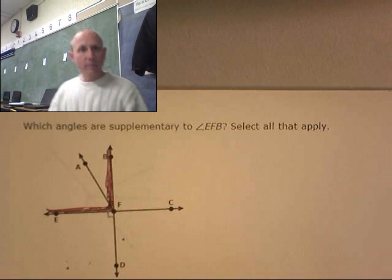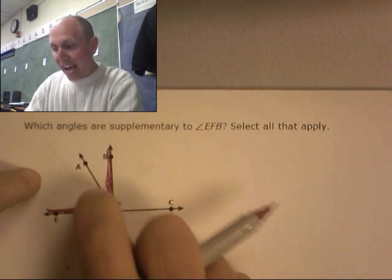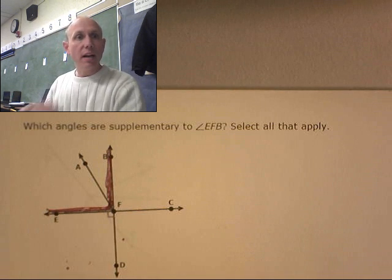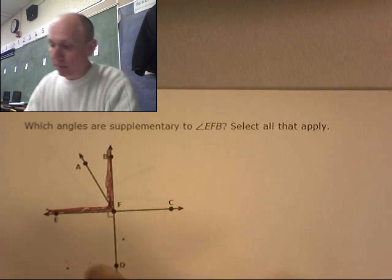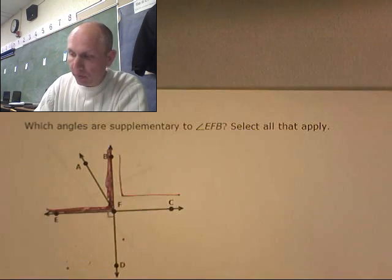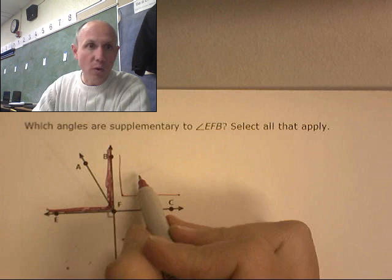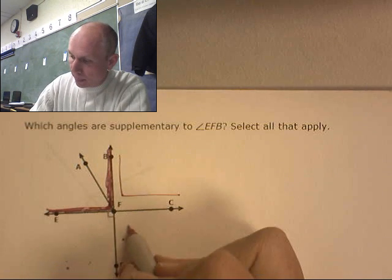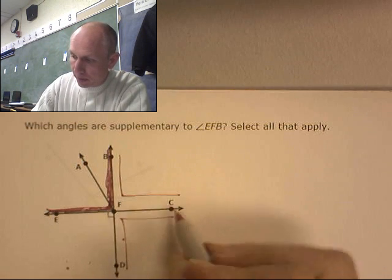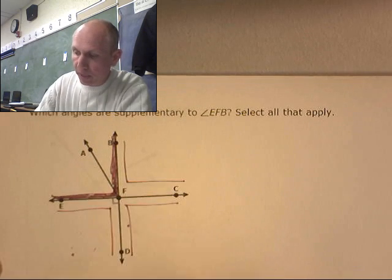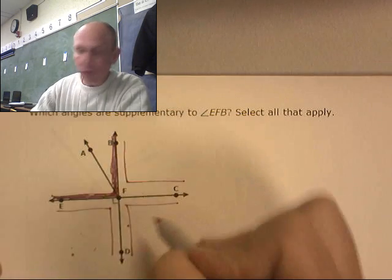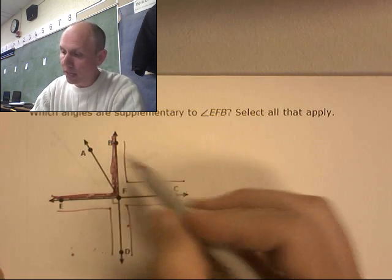Got it? Which angles, if I add them to this guy, will make a straight line? Which angles will add up to 180 degrees if we add them together? Well, here's one. This guy right here. This one plus that one is 180. This one plus this one is 180. And that one.